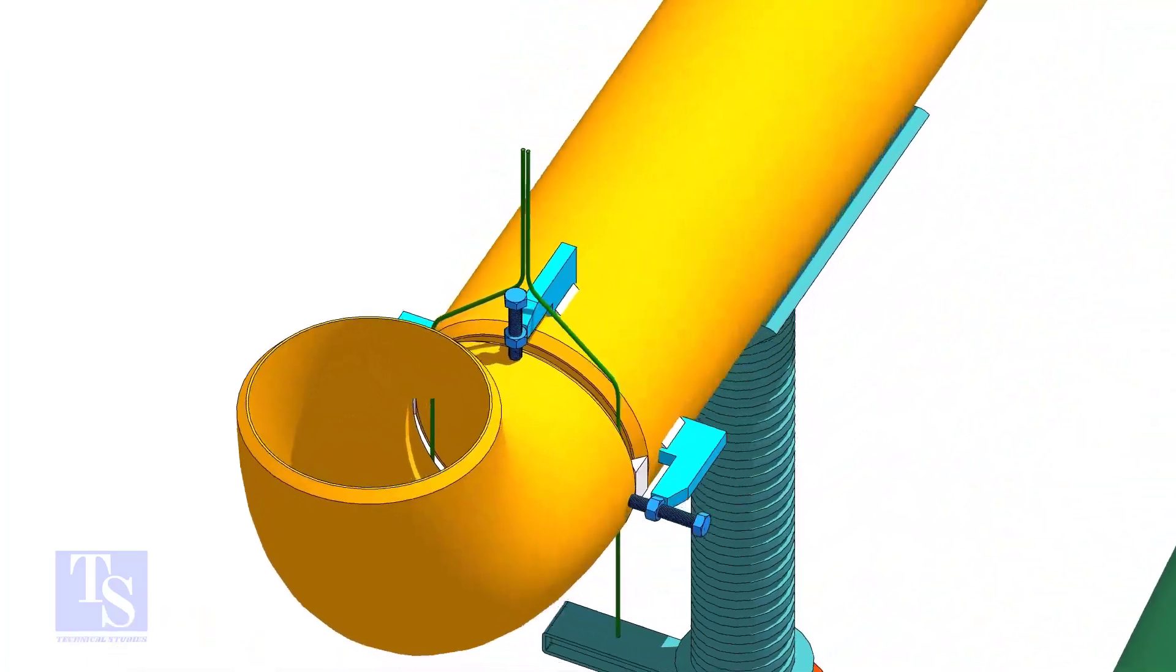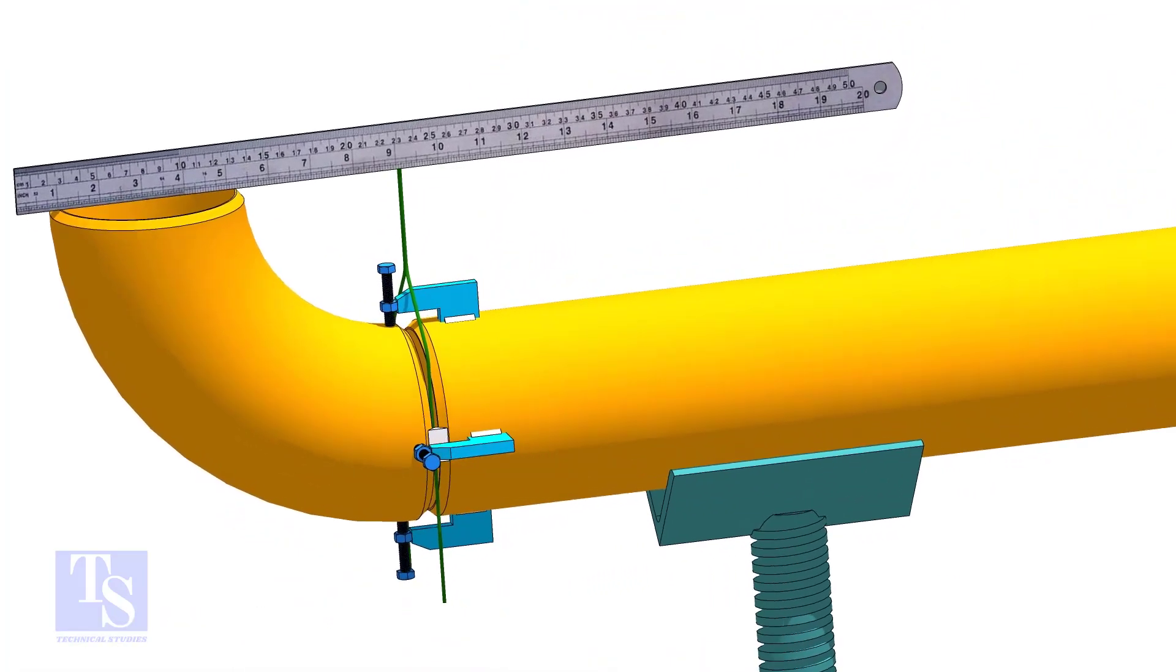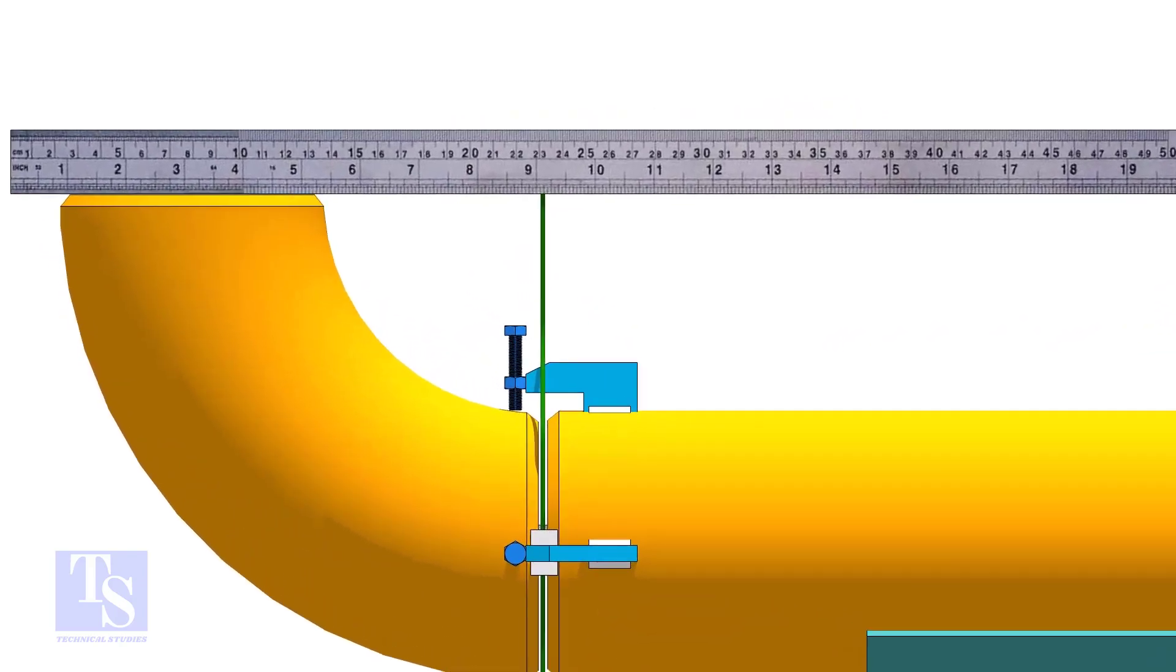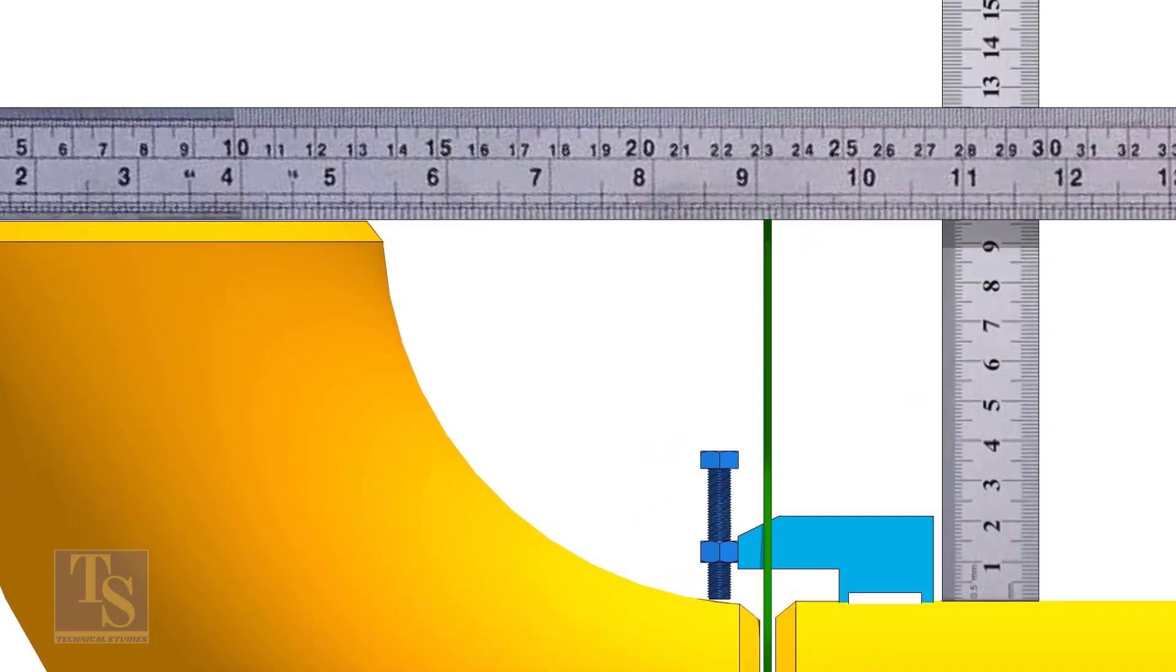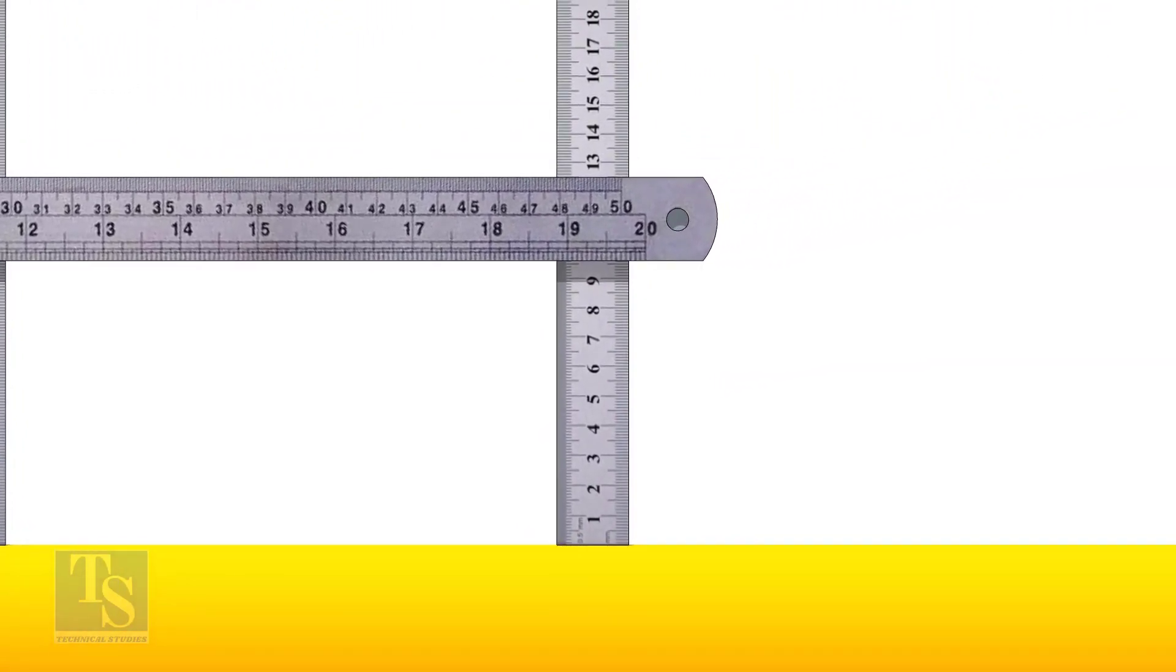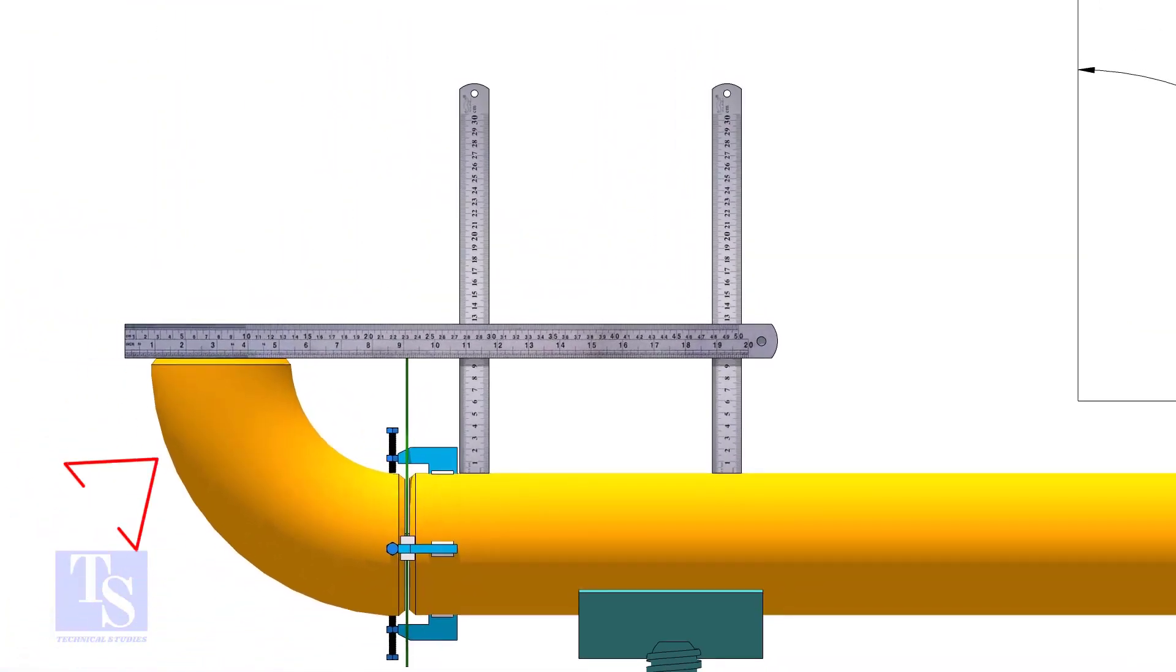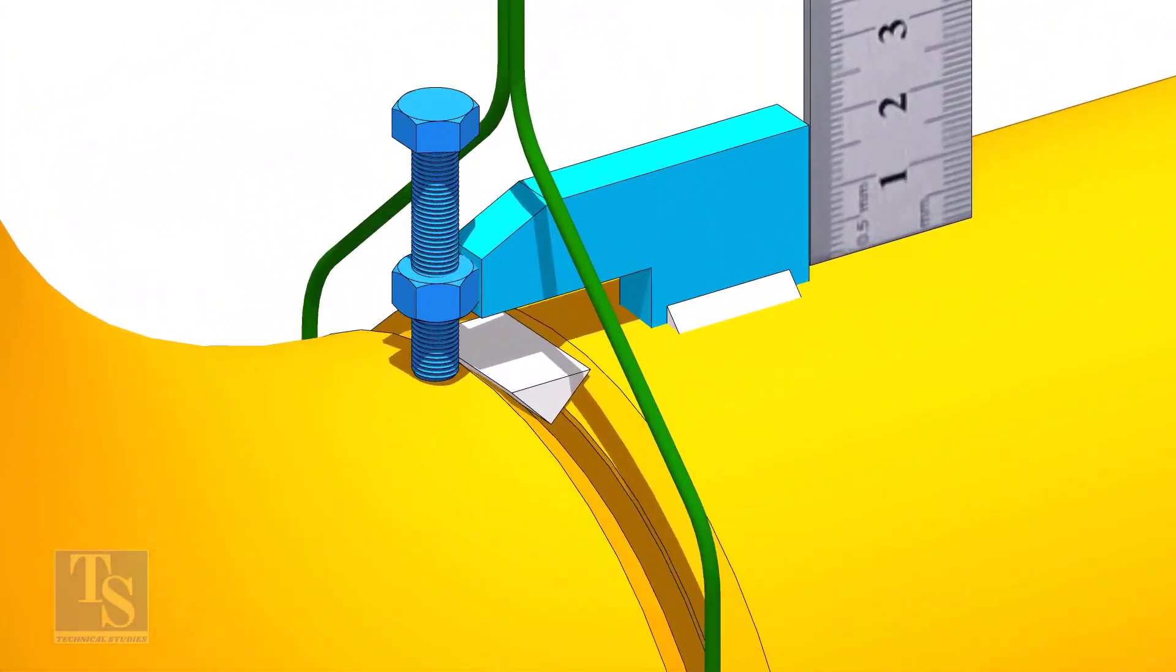Hold a large scale on the top of the elbow and check the distance as shown. If the distances are not equal, rotate the elbow to correct it. Tack weld in the top and bottom side of the joint.